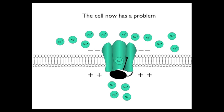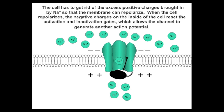The cell has a problem, and the problem is at the height of the action potential: a large amount of positive charges have been brought into the cell through the open sodium channels, and those positive charges accumulate at the membrane around the sodium channel. The cell has to get rid of the excess positive charges brought in by sodium so that the membrane can repolarize.